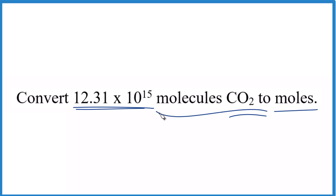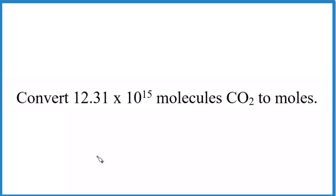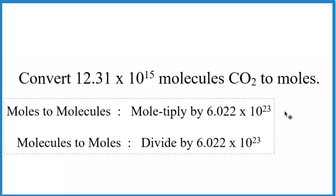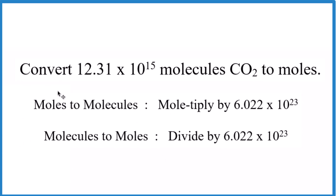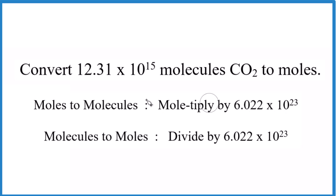A good way to remember how to convert molecules to moles is with this mnemonic here. If we're going from moles to molecules, we start with moles and multiply by Avogadro's number. In this case, though, what we're doing is going from molecules of CO2 to moles — molecules to moles, you just do the opposite: we divide by Avogadro's number.